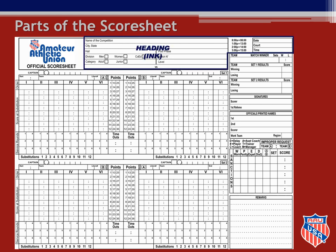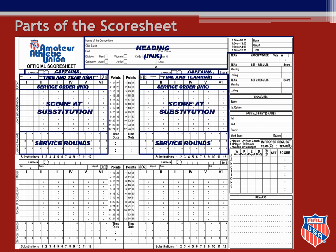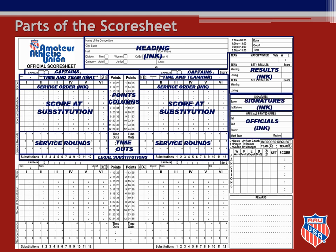During this presentation we will discuss what is contained in each section. Here you can see the heading information, the captains, time and team information, service order, service rounds, the scored substitution section, the substitutions row, the legal substitutions area which is not used in AAU scoring, the timeouts box, the points columns, the results, the signatures, the officials names, the sanctions box, and the remarks section.